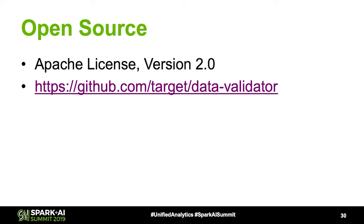We have open-sourced this work under an Apache license. You can find us on github.com at target/data-validator. As of this morning the private-to-public switch hadn't been flipped yet, but it's coming. Please check it out when it's available — we'd love any ideas, contributions, and to hear from people.